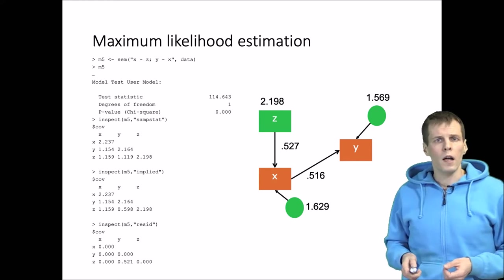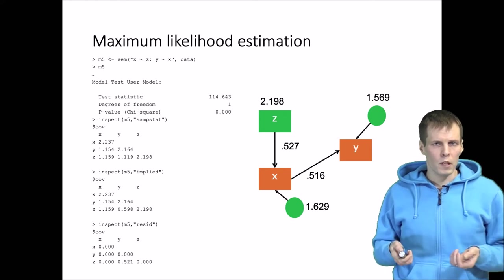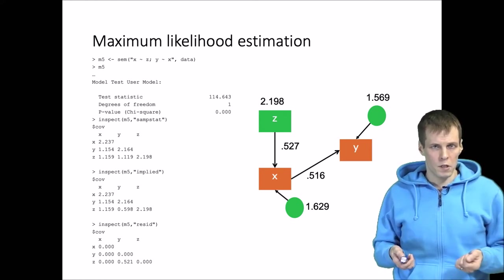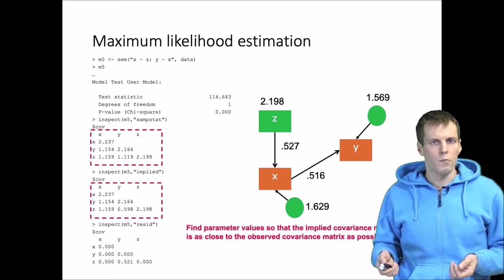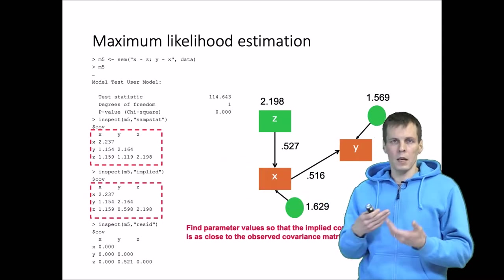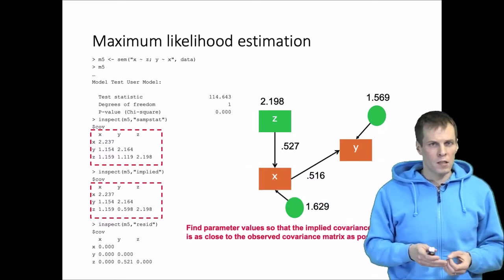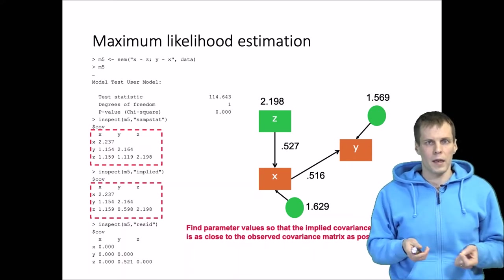Then we calculate the model implied covariance matrix. So conceptually we would apply the path analysis tracing rules, and that gives us a covariance matrix between all these observed variables x, y, and z. In practice, computer applies matrix algebra, but conceptually we can think of this being like an application of the tracing rules.